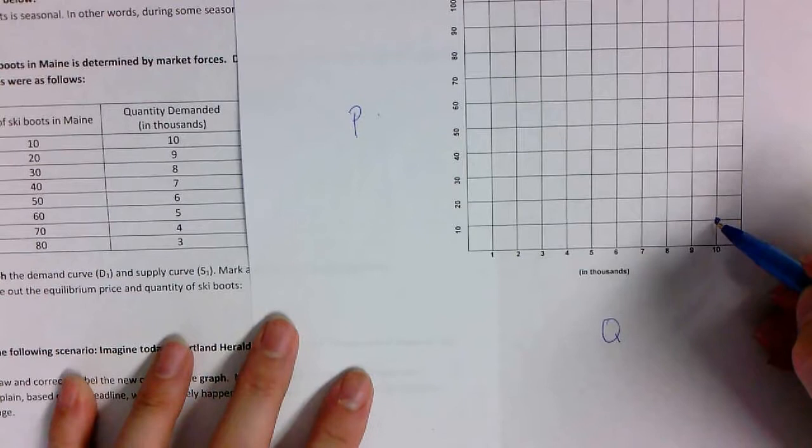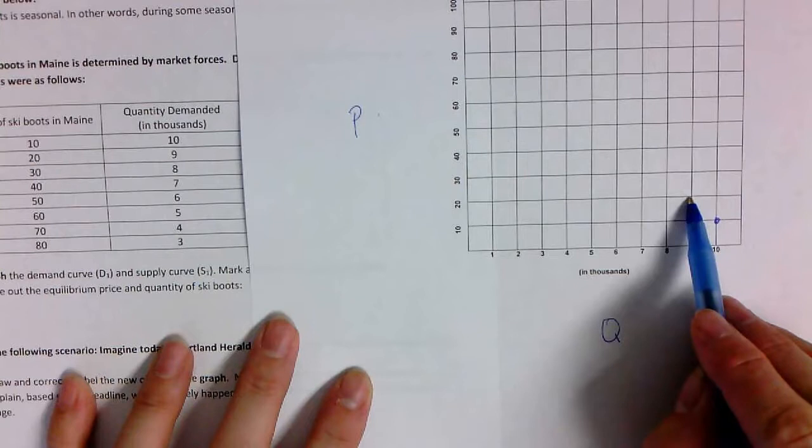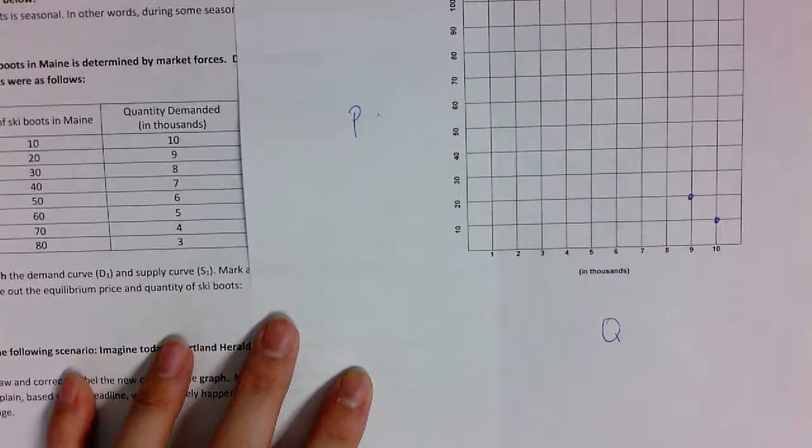We know it's quantity, Q, quantity. Oops, what have I forgot to put at the top? I've got to, or I'm going to lose points on the final. Put ski boots up here as the title.